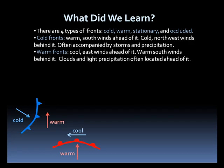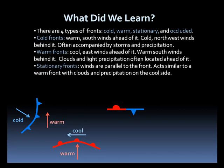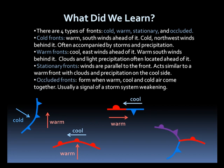Clouds and light precipitation are often located ahead of a warm front. A stationary front has winds running parallel to it. Like warm fronts, clouds and precipitation are usually found on the cool side of the front. Occluded fronts develop when warm, cool, and cold air comes together. An occlusion usually indicates a storm system that is weakening.